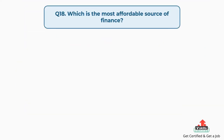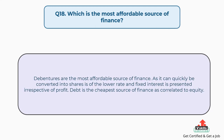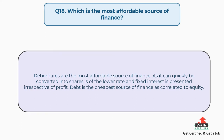Question number eighteen: which is the most affordable source of finance? Debentures are the most affordable source of finance, as they can quickly be converted into shares due to the lower rate and fixed interest presented irrespective of profit. Debt is the cheapest source of finance as correlated to equity.